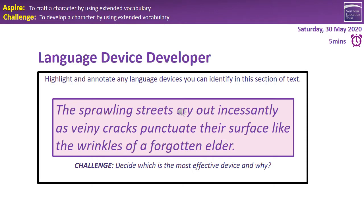We've got a simile: 'like the wrinkles of a forgotten elder.' It shows you how aged the road is — perhaps it's been there for a long time and it's been a route that nobody ventures down.